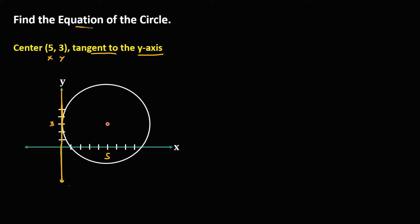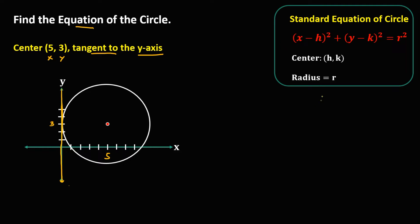To write the equation of the circle using the standard formula where the center is h and k. From the given center, h is positive 5 and k is positive 3. For the radius, since the distance from the center of the circle to any point on the circle is the radius, we count 1, 2, 3, 4, 5. So the radius is equal to 5. Take note that the radius is always positive.